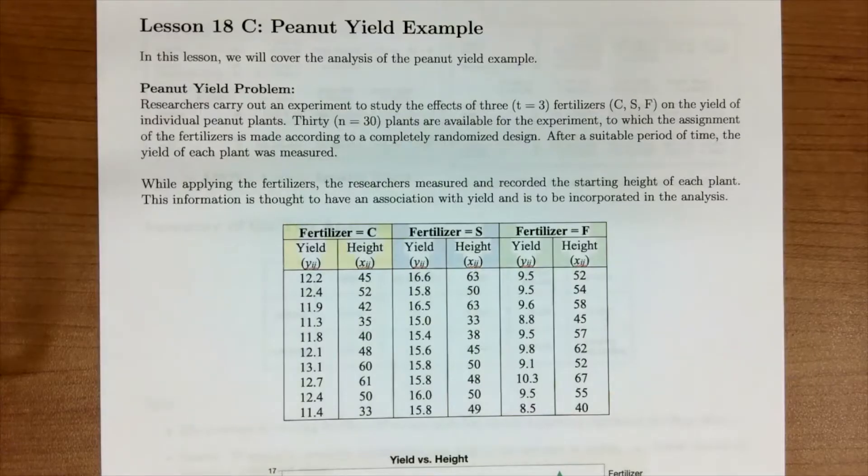In this lesson, we're going to cover the analysis of covariance using the peanut yield example. Recall, in this example, we're trying to study the effect of three fertilizers on the yield of peanut plants.